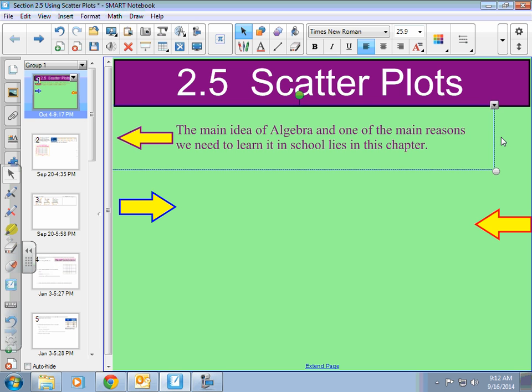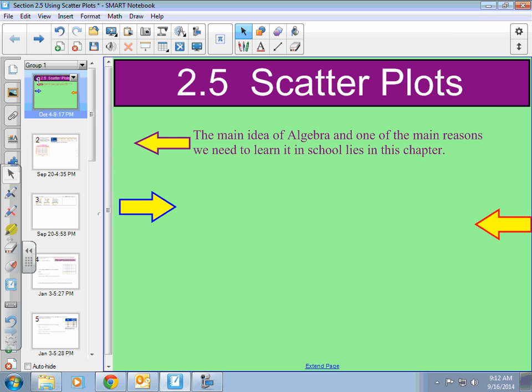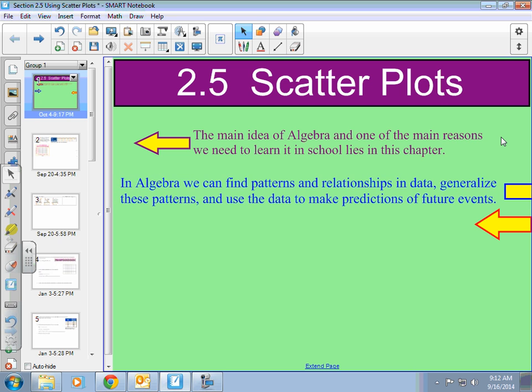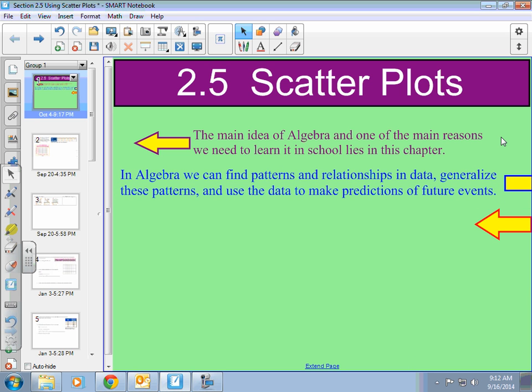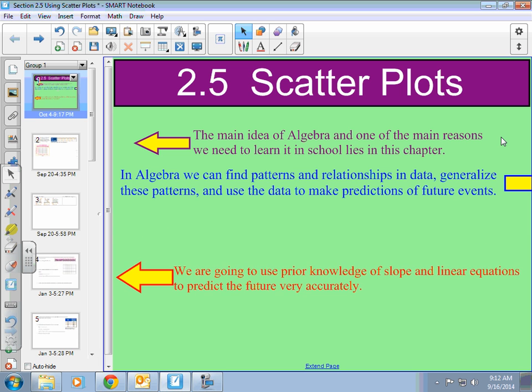The main idea of algebra, and one of the main reasons we need to learn it in schools, lies in this chapter. In algebra, we can find patterns and relationships in data, generalize these patterns, and use the data to make predictions of future events. We're going to use prior knowledge of slope and linear equations to predict the future very accurately. Scatter plots can be very useful, and they're used in everyday life.